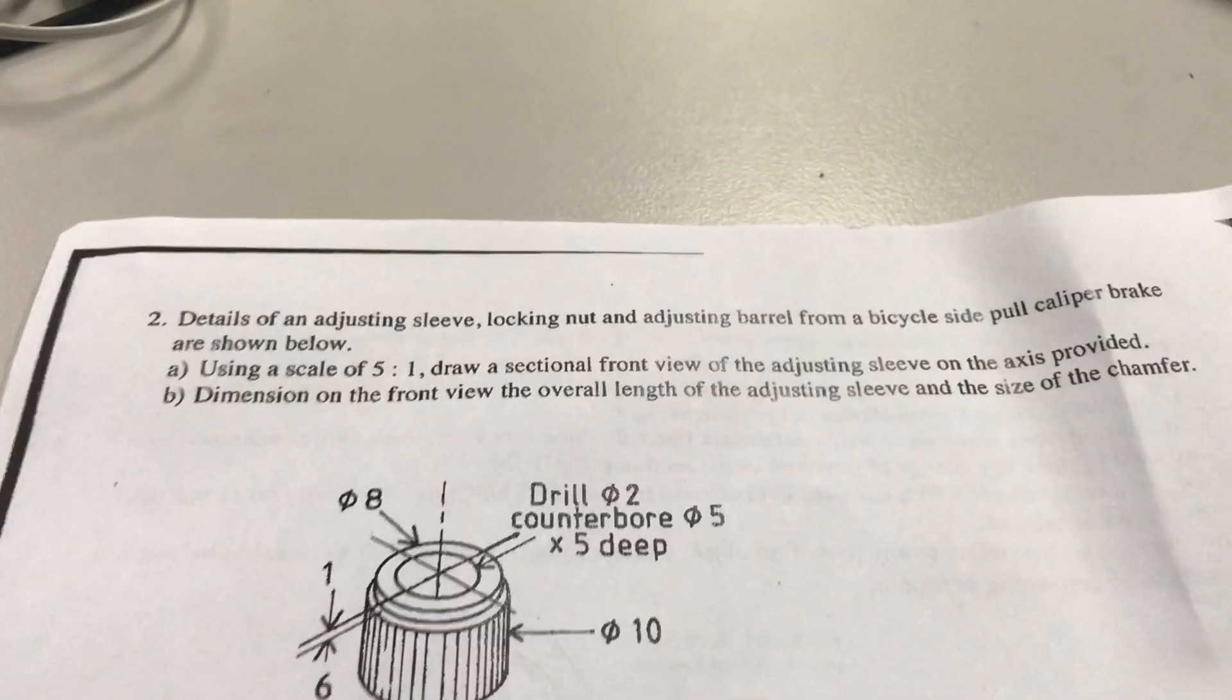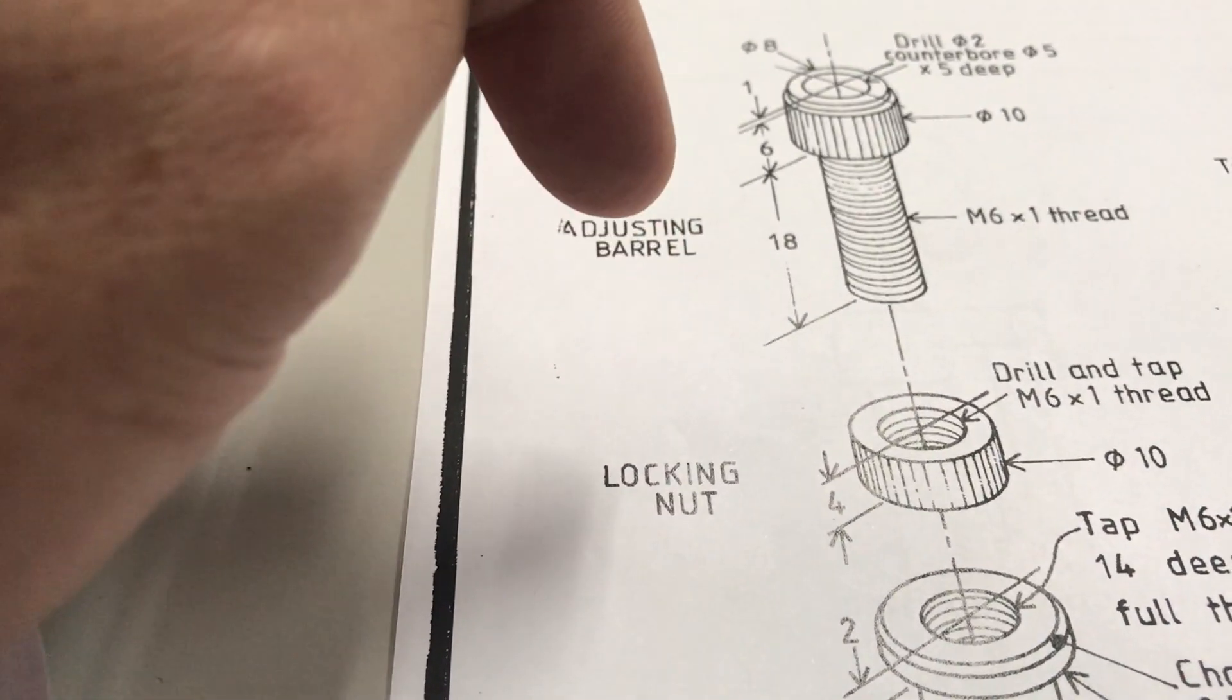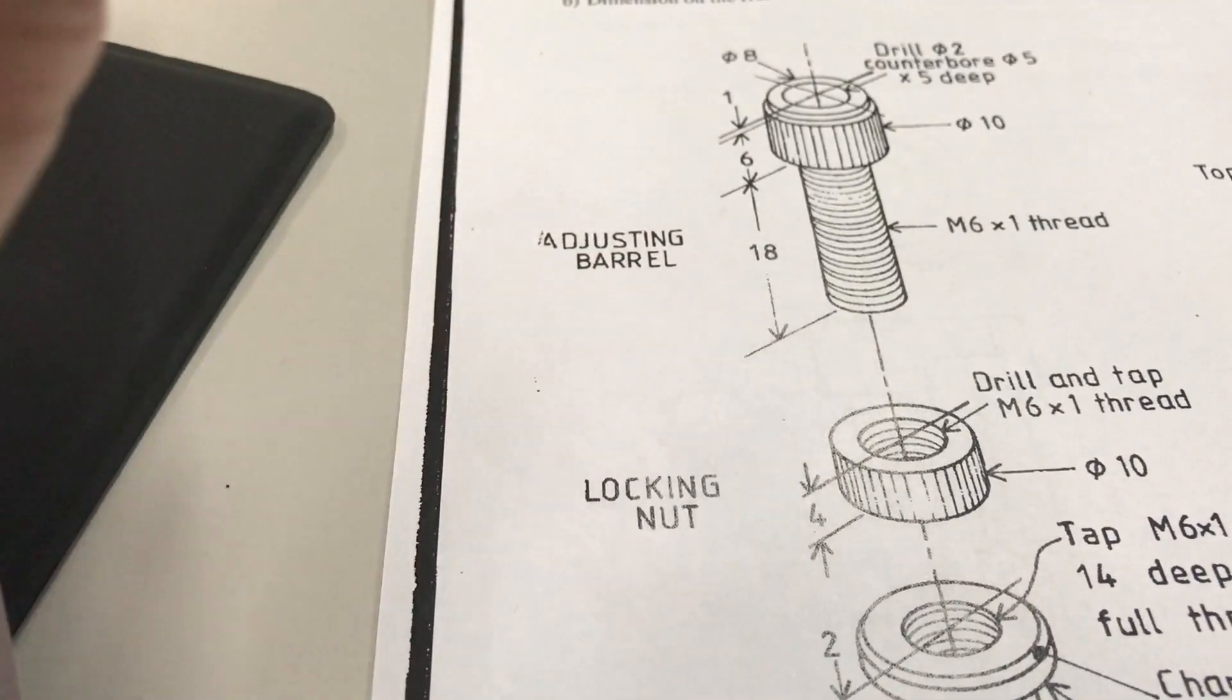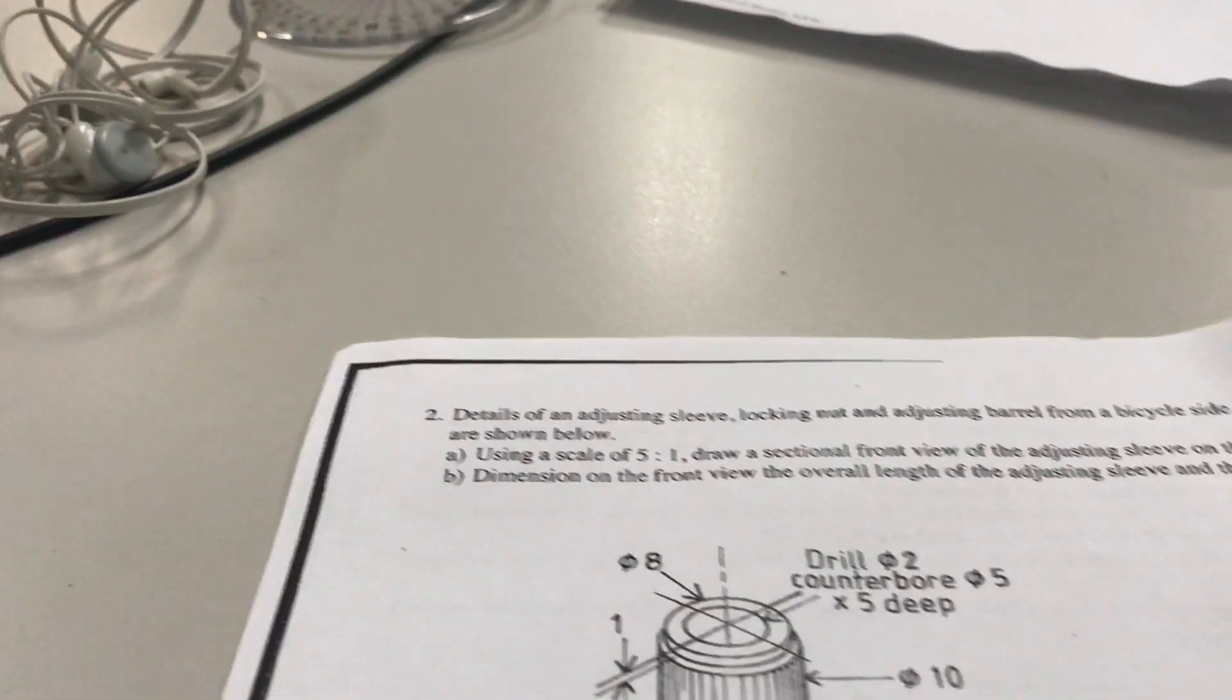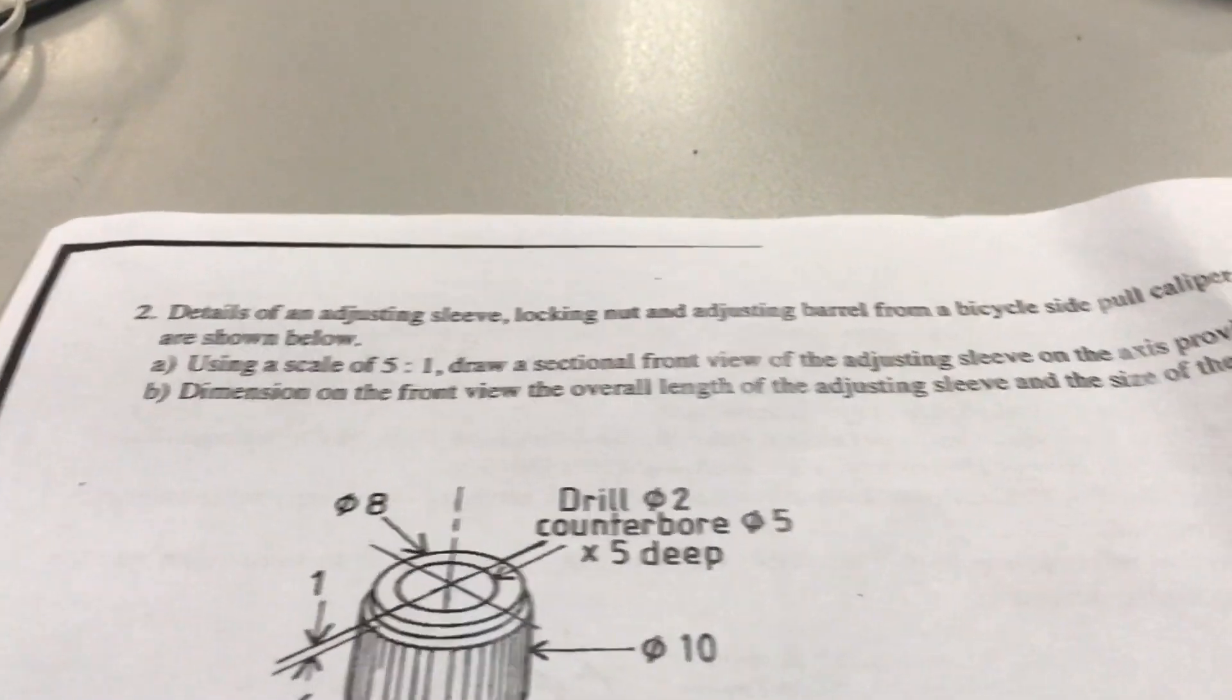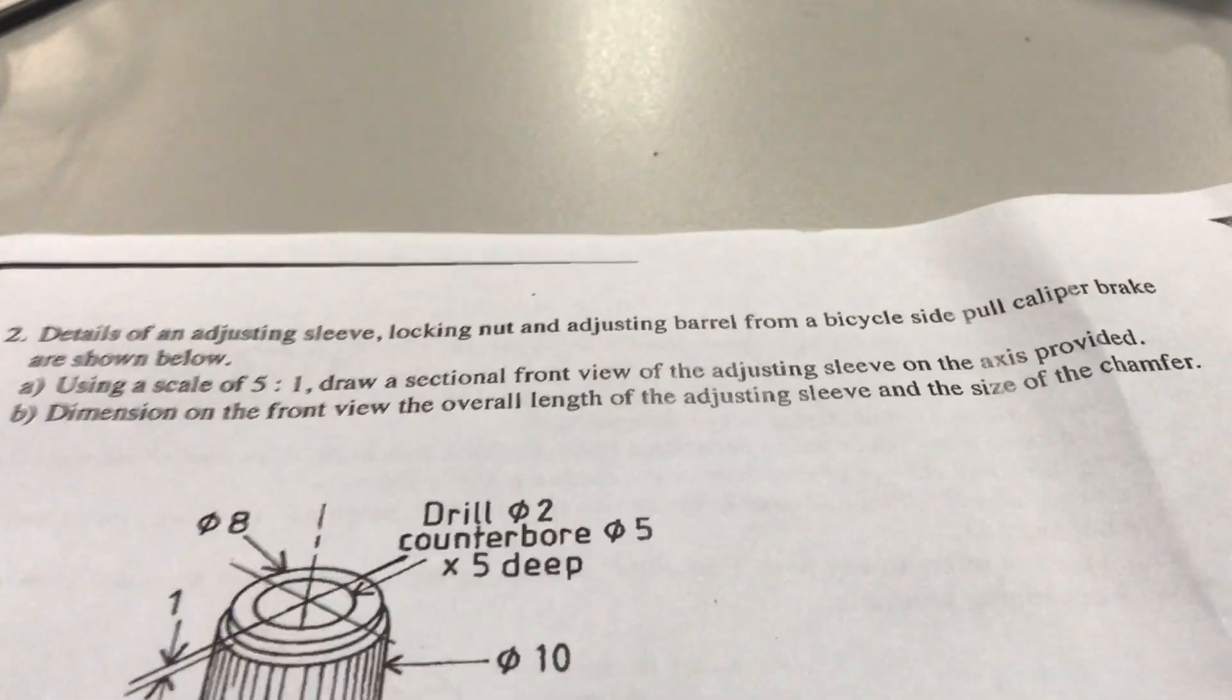This is an adjusting sleeve, locking nut, and adjustment barrel for a bicycle side-pull caliper brake. The question is basically asking you... I'll just try and get us in a better position here so we can actually see the question.